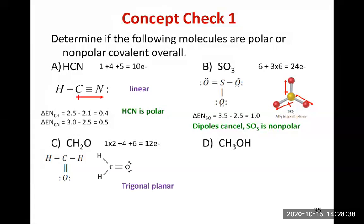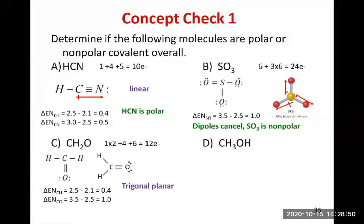Do we have polar bonds in H2CO? The C–H bonds are non-polar — the electronegativity difference is too small. The C=O bond has an electronegativity difference of 1.0, which is definitely polar. So we have one polar bond — the C=O bond — and the dipole moment points from carbon toward oxygen, since oxygen is the most electronegative element. Is H2CO polar overall? Yes — the dipole moment of the C=O bond is not cancelled by anything, so the net dipole for the molecule matches the C=O dipole moment.